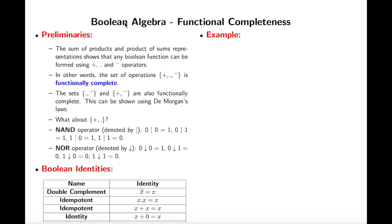In this video we will talk about functional completeness in Boolean algebra. We saw earlier that any function can be represented by a sum of products form using min terms, and product of sums form using max terms. In both of them, the operations used were multiplication (dot operator), addition (plus operator), and complement.